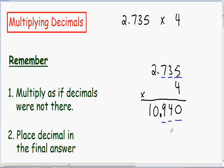And you should never have a trailing zero in your final answer. So our final answer is just going to be 10.94. 10.94 is exactly the same as 10.940.